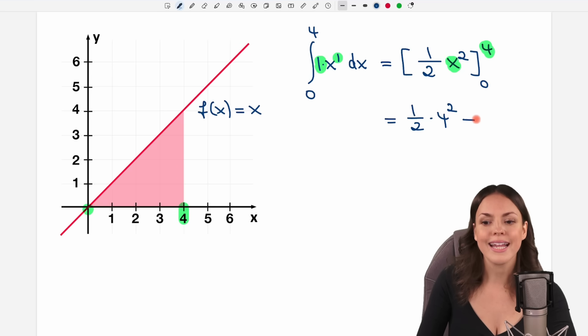When we're done with the upper limit, we always write a minus and do the same thing with this limit now. So we're going to write everything down, but instead of the x we're going to insert the 0 and square it as well.